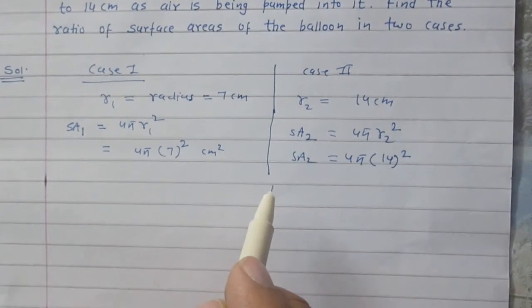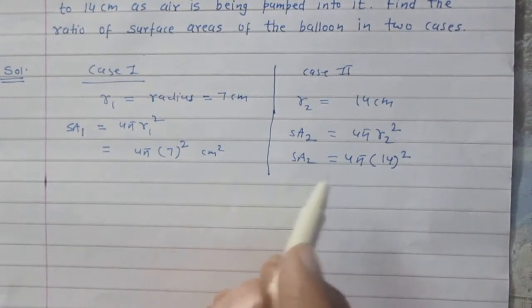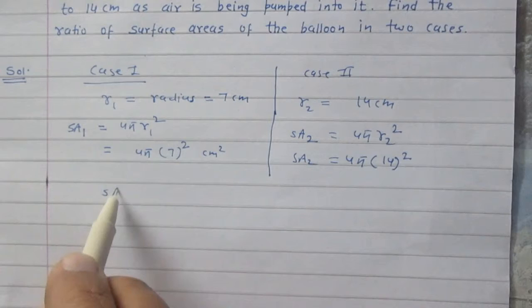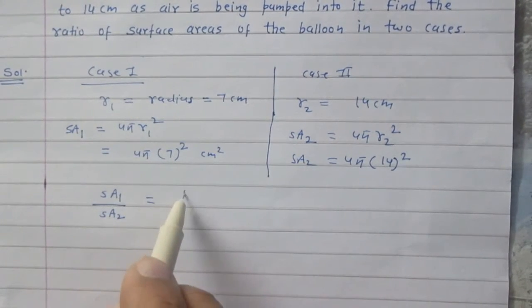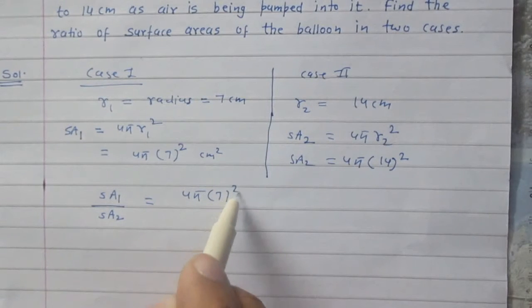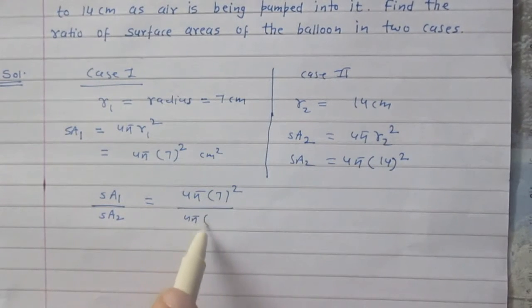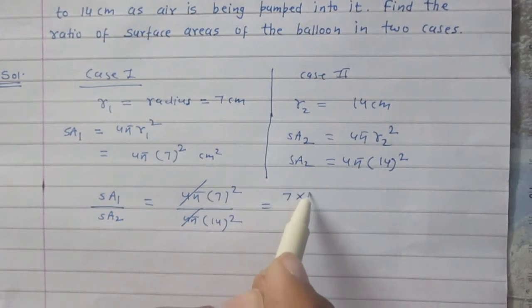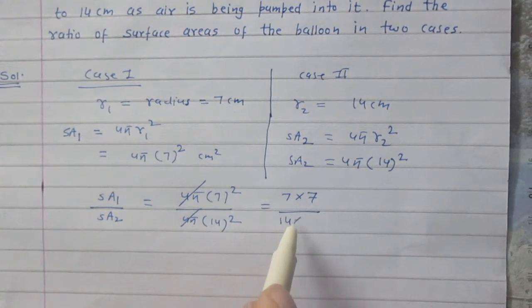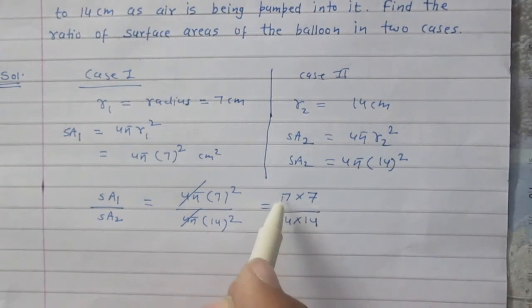We are to find the ratio of their surface areas. So the ratio is SA1/SA2, that is 4π(7)² divided by 4π(14)². Here 4π can be cancelled. We get 7×7 in the numerator and 14×14 in the denominator.